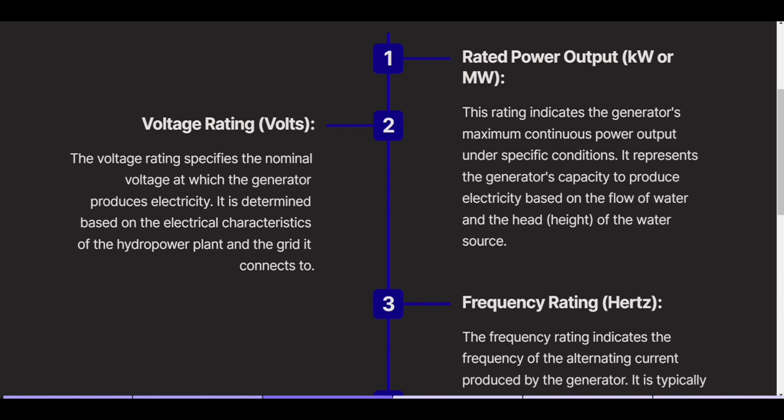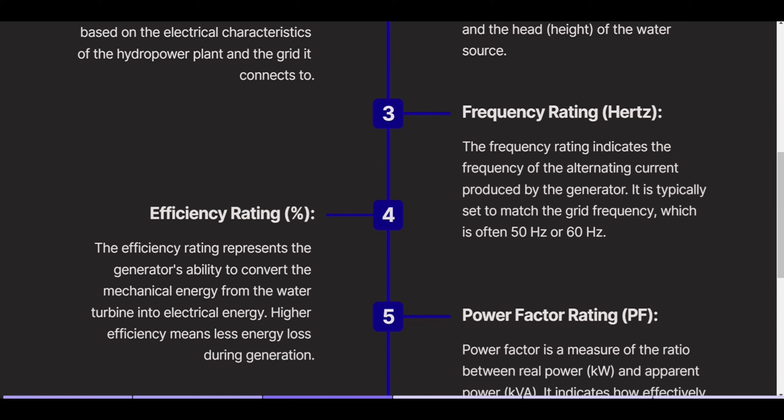Voltage rating specifies the nominal voltage at which the generator produces electricity. It is determined based on the electrical characteristics of the hydropower plant and the grid it connects to. Frequency rating indicates the frequency of the alternating current produced by the generator, typically set to match the grid frequency, which is often 50 hertz or 60 hertz.